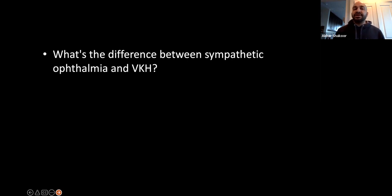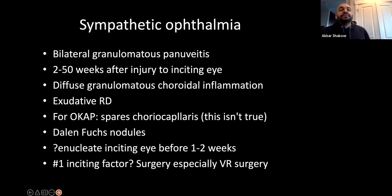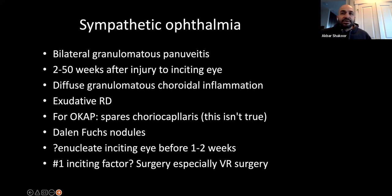The difference between VKH and sympathetic ophthalmia is just one thing — trauma. Histologically, they are indistinguishable. It has been said that sympathetic spares the choriocapillaris, but this is not necessarily true — the appearance that sympathetic spares the choriocapillaris is a histological artifact.